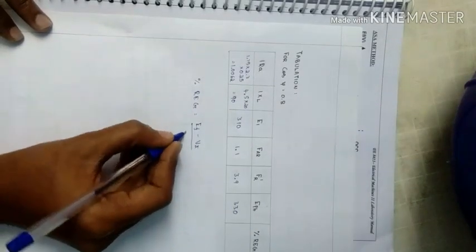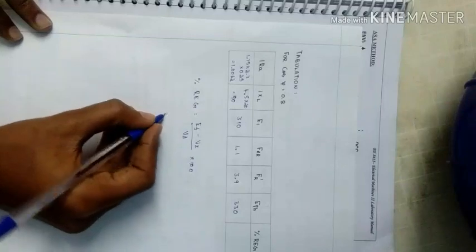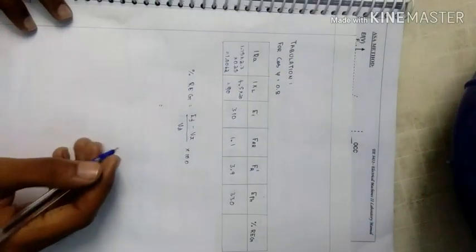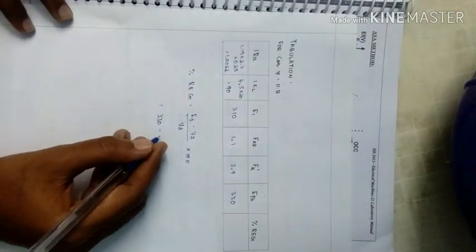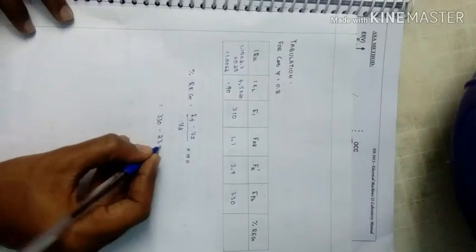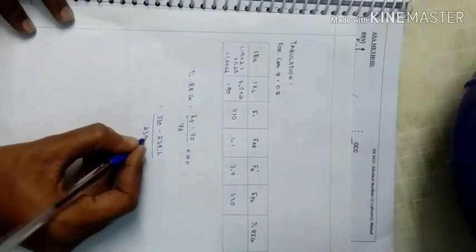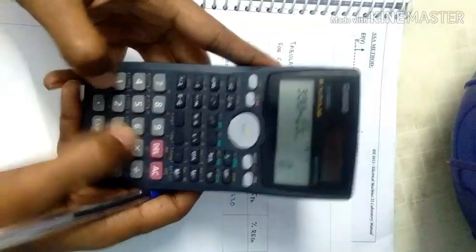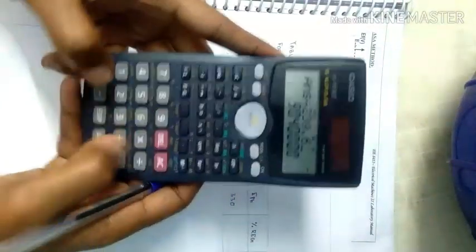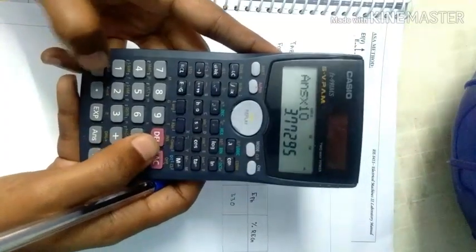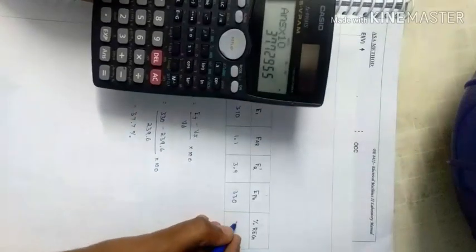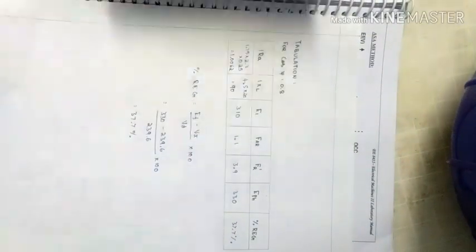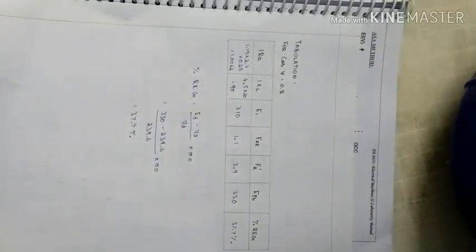Next, percentage regulation. For percentage regulation, the formula will be (EF minus VT) divided by VT into 100. This EF value will be 330 minus VT which is the rated voltage per phase of the alternator, that is 239.6, divided by 239.6 into 100. 330 minus 239.6 divided by 239.6 into 100, that is 37.7 percent. The experiment of ASA method is over.